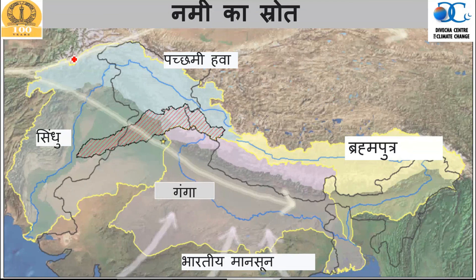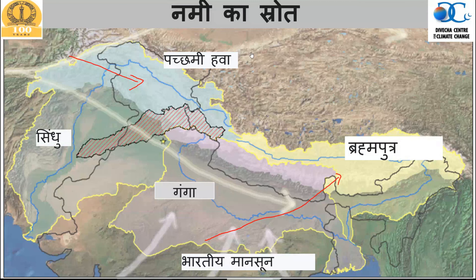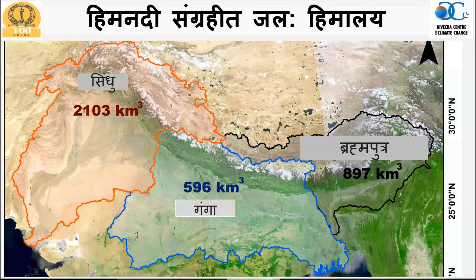We discussed the influence of western disturbances and the influence of the Indian monsoon on the accumulation of snow into the glacier. Particularly in western Himalayas, accumulation is predominantly coming from westerlies in winter time, and in eastern Himalayas it is predominantly coming from the Indian summer monsoon. These are the fundamental aspects of the source origin. We already covered how much glacier stored water is in the Indus, Ganga, and Brahmaputra rivers.